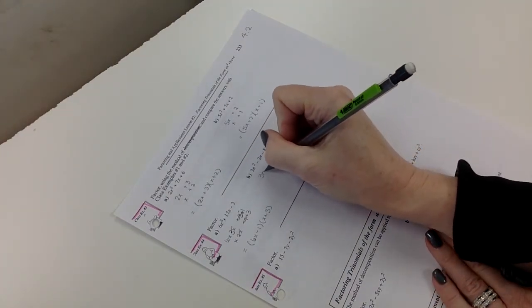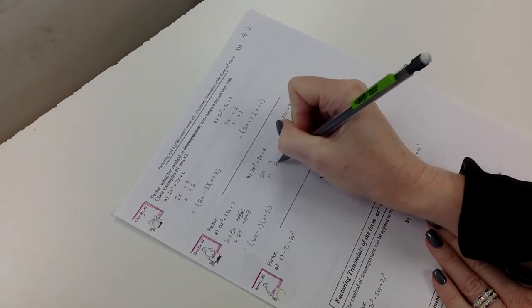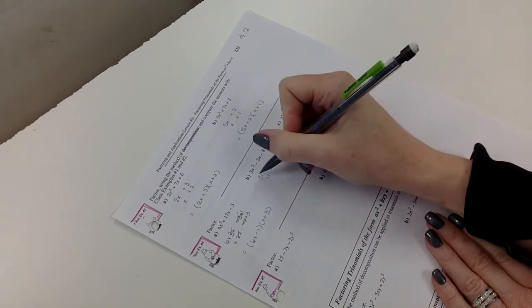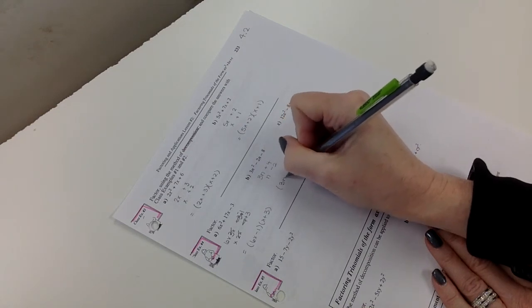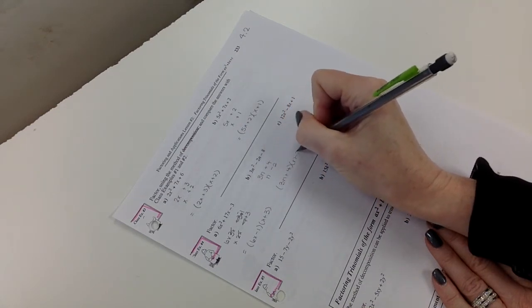Okay, so here I'm gonna do 3n and n, 4 and 2, plus and minus. Minus 6 plus 4. Yes. 3n plus 4 and n minus 2.